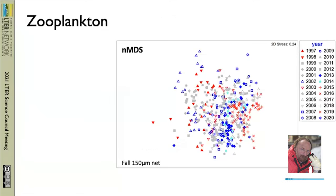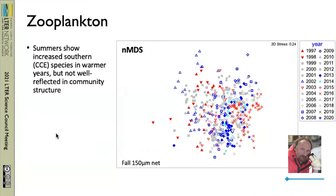In the zooplankton realm, what you're seeing here is an NDS plot of community composition. What you're basically seeing is the lack — more or less — of pattern that's driven by cold years in blue versus warm years in red. But what we do tend to find is that, as a generalization, summers show increased warm water species in warm years; it just doesn't seem to be reflected heavily in the community structure.